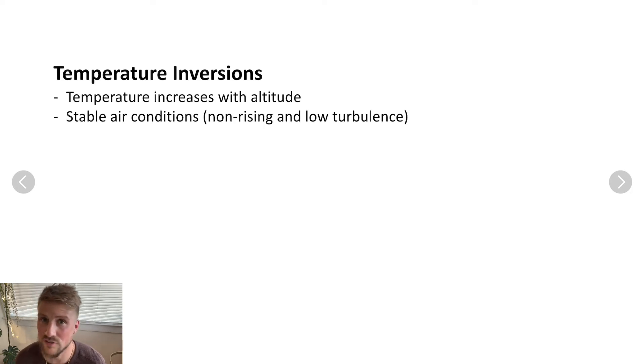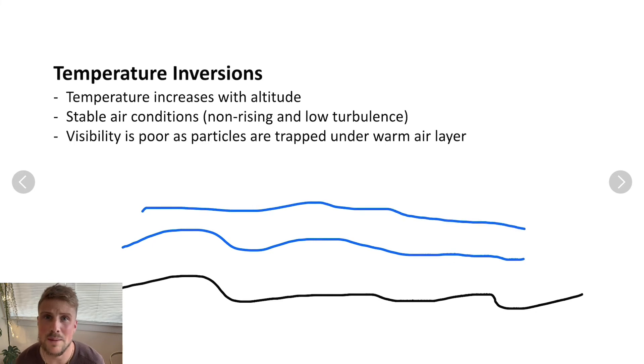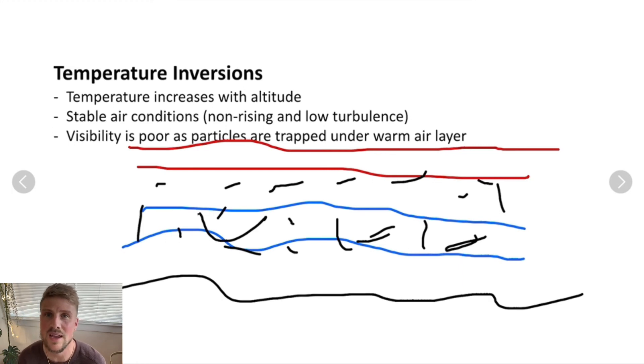Visibility is usually poor in an inversion, however, because the warm air layer traps things such as water vapor, dust, smoke, and other particulates which reduce the visibility. Therefore, when there is a temperature inversion with high relative humidity, a pilot should expect fog, haze, or clouds affecting their visibility, but smooth and stable conditions otherwise.